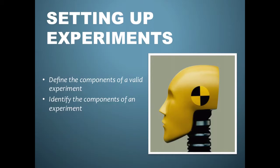And so in this lecture, we're going to define the components of a valid experiment using an example of airbags and crash dummies. And then after that, I'm going to give you guys a chance to identify the variables in another experiment by yourself.